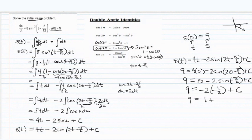So that means 9 equals 1 plus c, which means c is equal to 8. So now we're able to complete our whole function. s of t is 4t minus 2 sine of 2t minus pi over 6 plus 8.